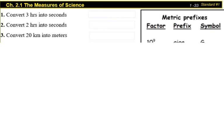Converting kilometers into meters: kilo stands for 1,000. So 20 kilometers is the same as 20,000 meters, because kilo stands for 1,000.